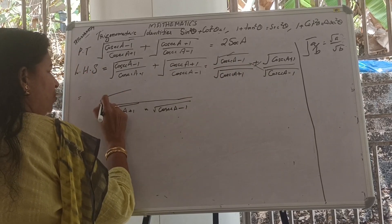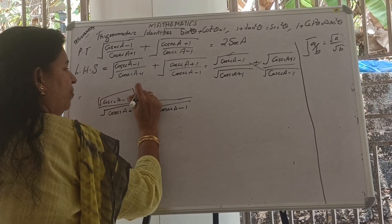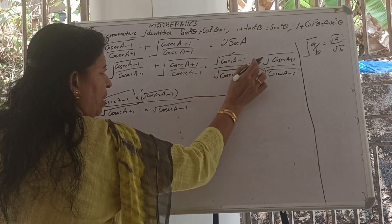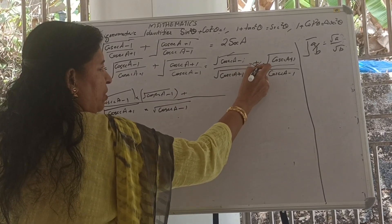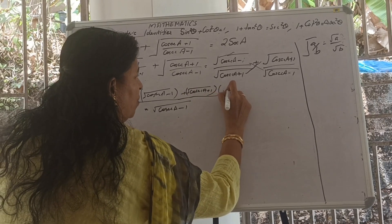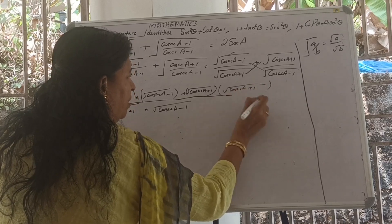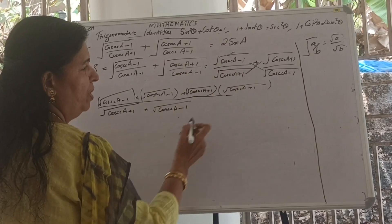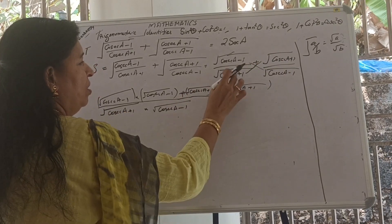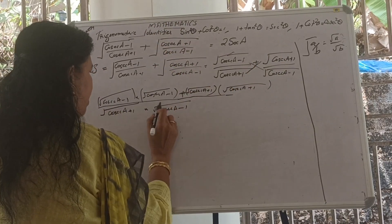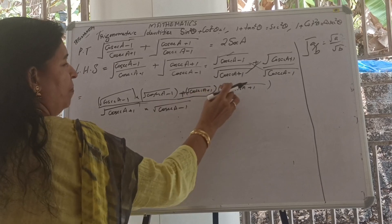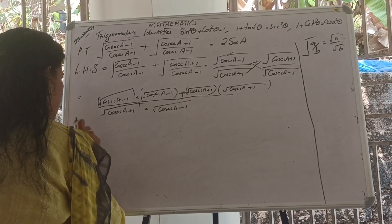The numerator becomes: root of (cosec A minus 1) into root of (cosec A minus 1), plus root of (cosec A plus 1) into root of (cosec A plus 1). The denominator, taking the LCM, becomes root of (cosec A plus 1) into root of (cosec A minus 1).